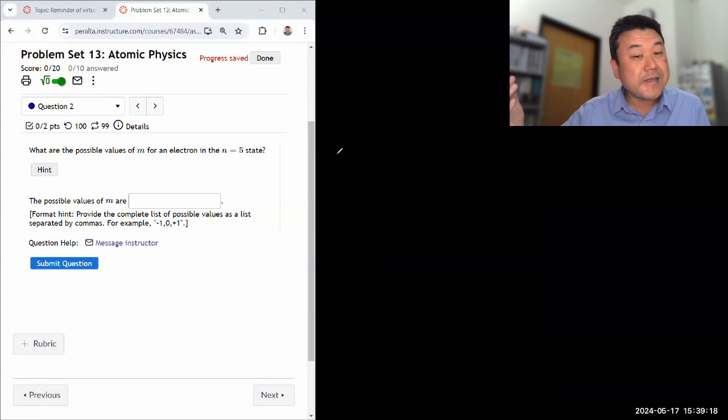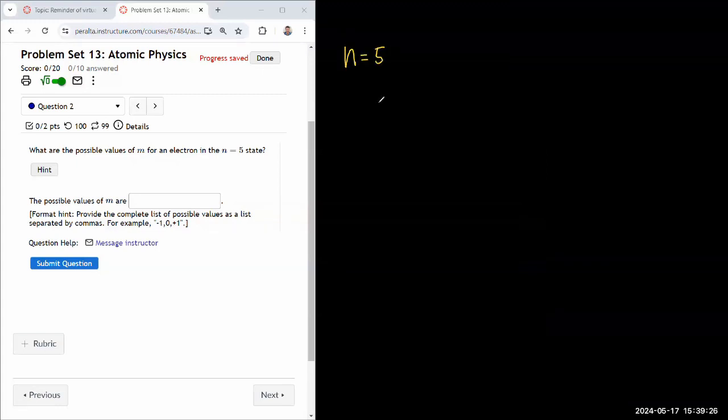Let me just list all the possible combination of quantum numbers. So if n is equal to 5, then remember the possible values of l are from 0 to all the way to n minus 1. So that means the possible values of l would be 0, 1, 2, 3, 4.